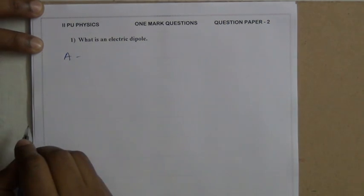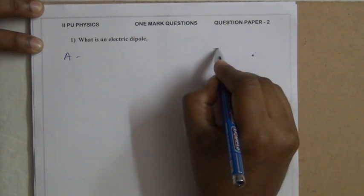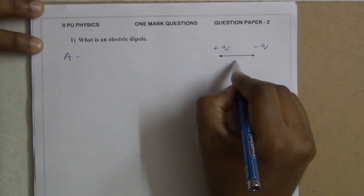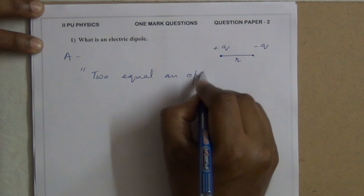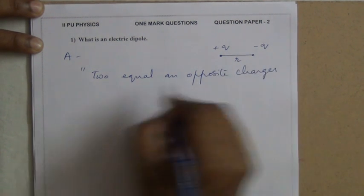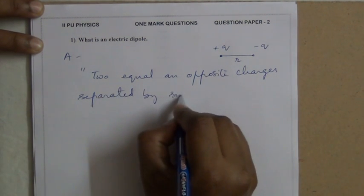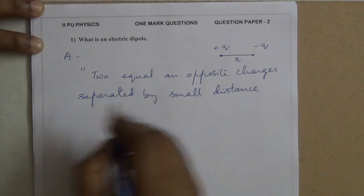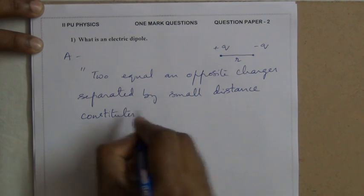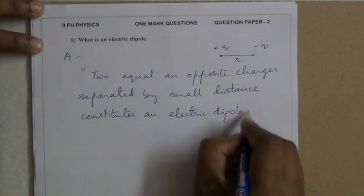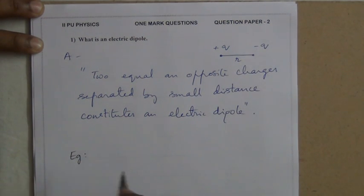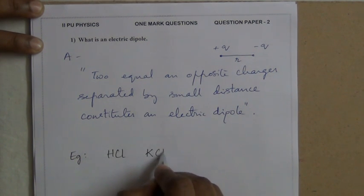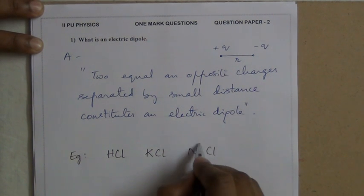This is Question Paper 2. What is an electric dipole? Two equal and opposite charges separated by a small distance constitute an electric dipole. Examples of electric dipoles include HCl, KCl, and NaCl molecules — such as Na⁺Cl⁻, K⁺Cl⁻, and H⁺Cl⁻.